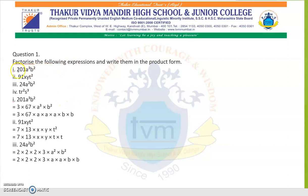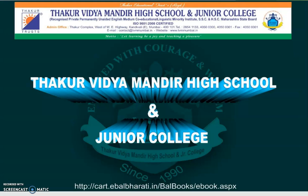Let us see some more factorization sums. For 201 a cubed b squared: the factors of 201 are 3 times 67, a cubed is a times a times a, and b squared is b times b. Similarly, find the factors of 24 a squared b squared and 91 x y t squared — solutions are already provided. Just write down the factors. Thank you, children. Have a nice day and practice the sums.